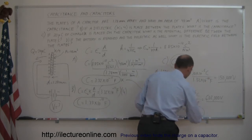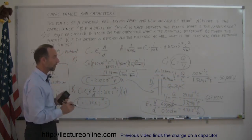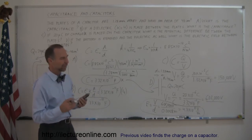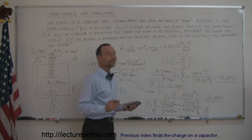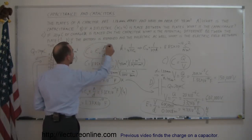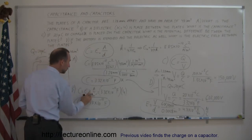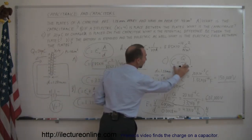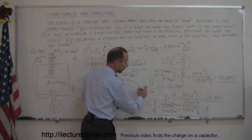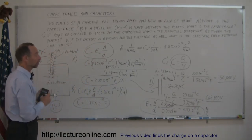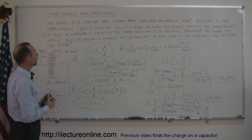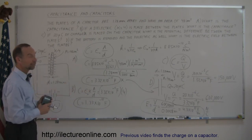The electric field between the plates is 4.7 times 10 to the eighth volts per meter — sometimes also expressed as newtons per coulomb. This problem nicely shows how to use capacitance from physical dimensions, how adding a dielectric changes things, how to find charge and voltage from the capacitance definition, and how electric field relates to potential difference divided by plate separation.